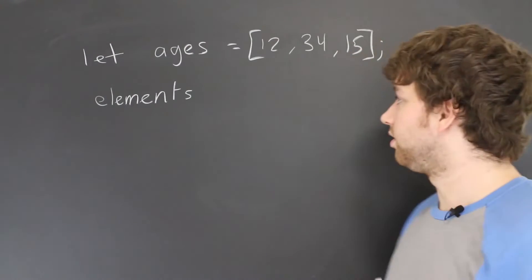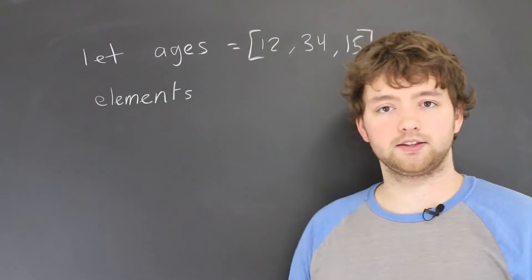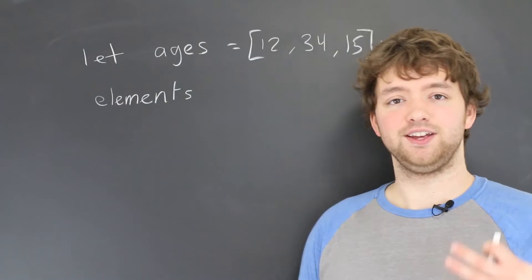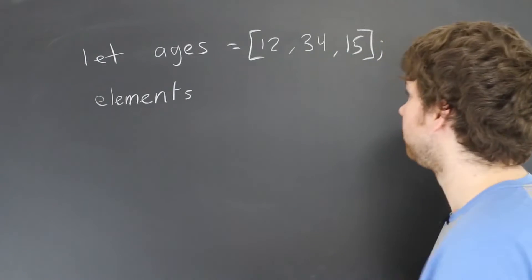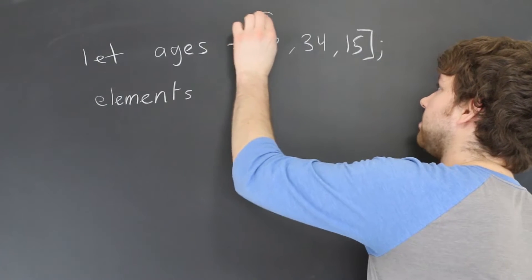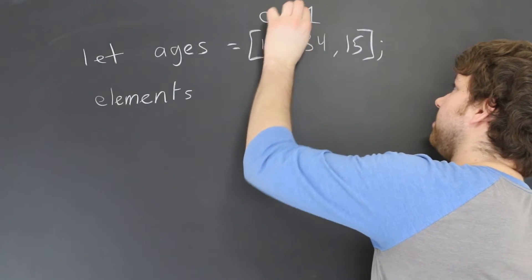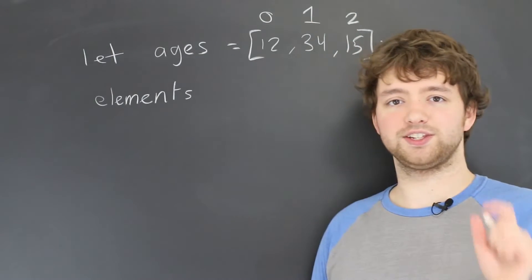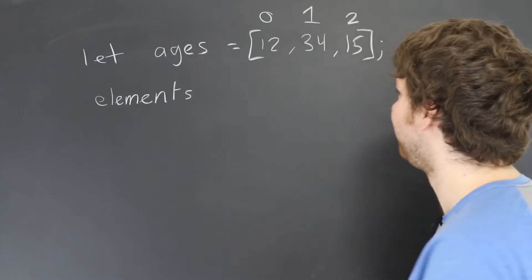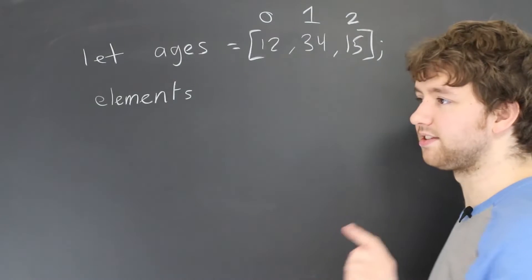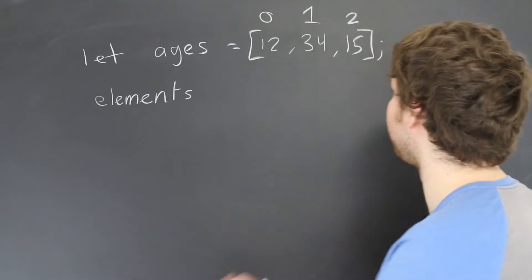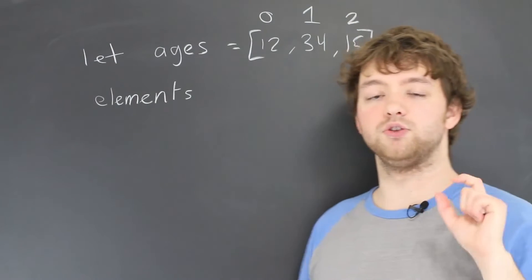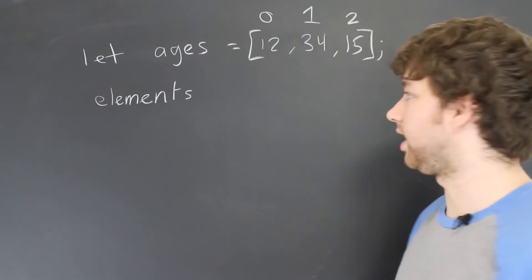Now every single element gets an index. An index is basically a way to describe what position these elements are in. So the first item has index zero, the second has index one, and the third has index two. It starts at zero and counts up, so it's always one less than the item number. If we're talking about the third item, then it's the second index.